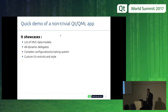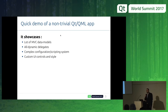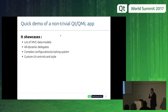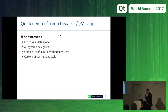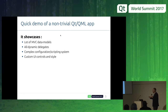I will show you an application with a lot of MVC data models — more than 50 models. You have dynamic delegates where delegates are adapted to the content of the model. You also have completely different kinds of controls inside the same model according to some properties. We use a very complex configuration and scripting system, so QML will be leveraged to be more than just UI. And there are a lot of custom UI controls and styling options.